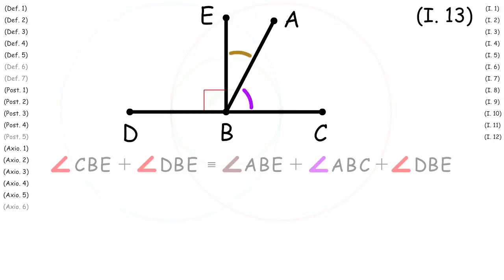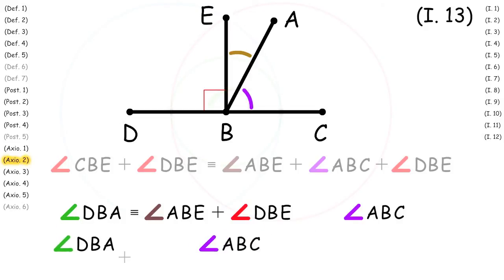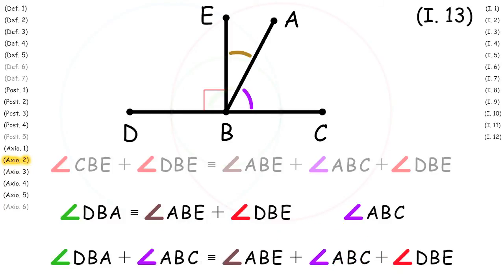Next looking at angle DBE we apply Proposition 2 to show that angle DBE plus angle ABC is congruent to angle ABE plus angle ABC plus angle DBE.